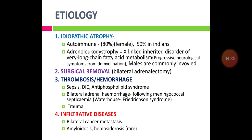The five major causes of primary adrenal insufficiency are: first, idiopathic atrophy; second, surgical removal; third, thrombosis or hemorrhage; fourth, infiltrative diseases; and fifth, infections.